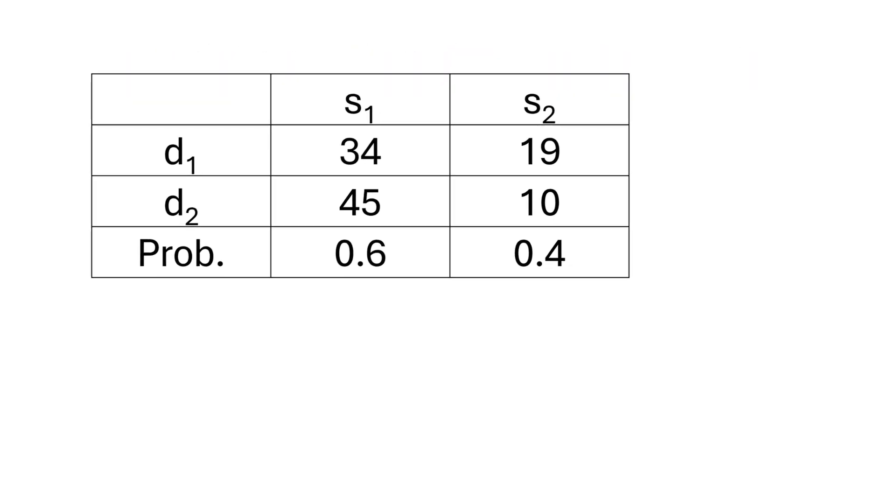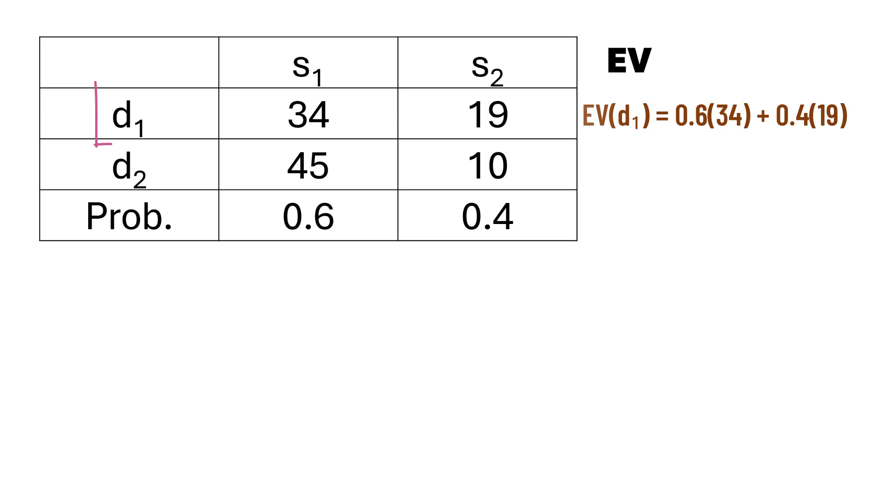With the current probabilities, the expected value of D1 is 28, and for D2, the expected value is 31. Now, we want to examine how changing the probability values impact the expected values, and hence the decisions.